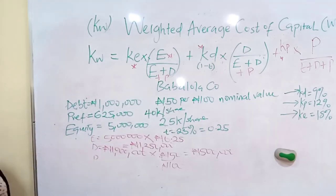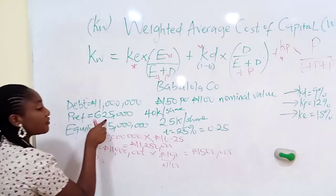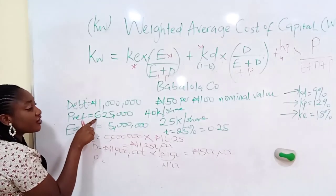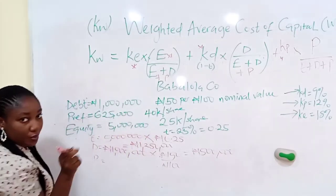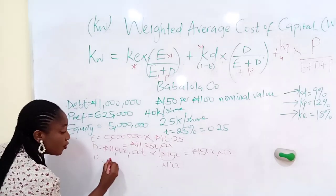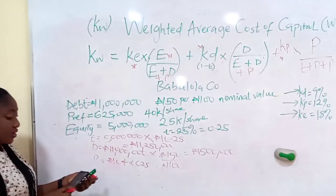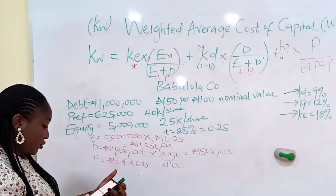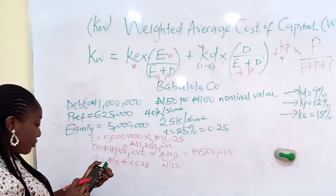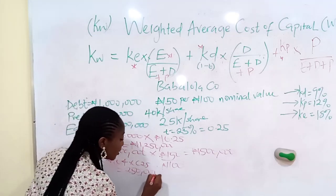We have preference shares. The value of preference shares: they have 625,000 shares at 40 kobo per share. That's 0.4 times 625,000 shares, which equals 250,000 Naira.